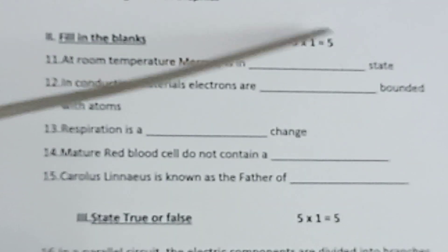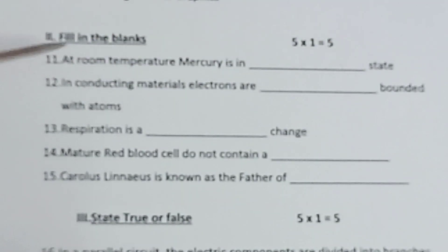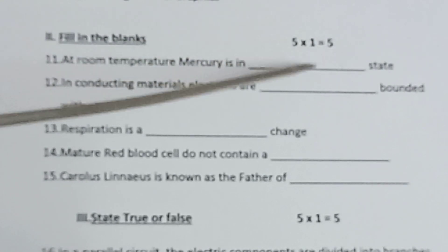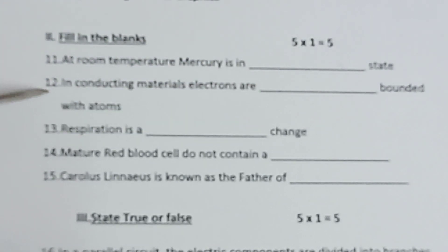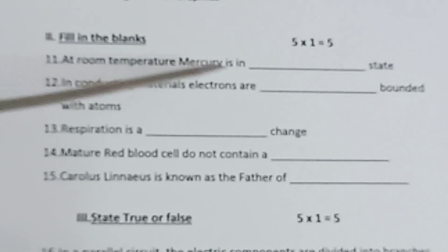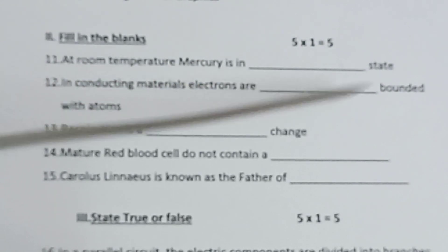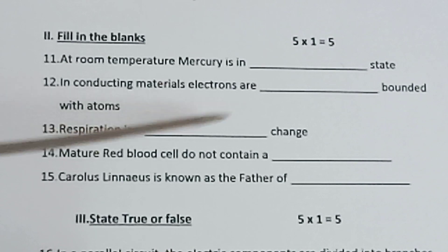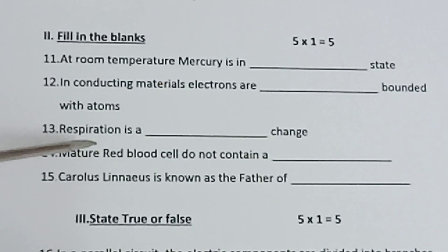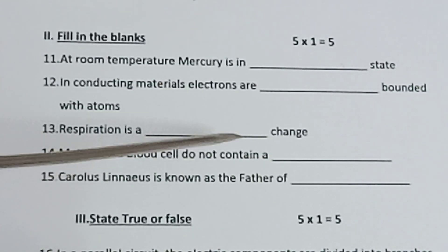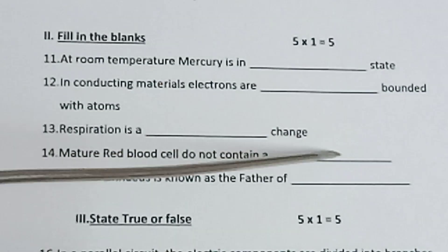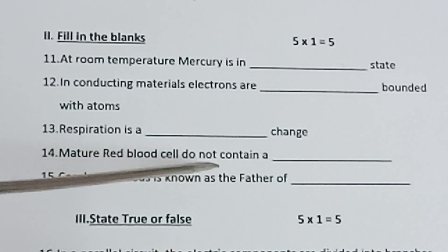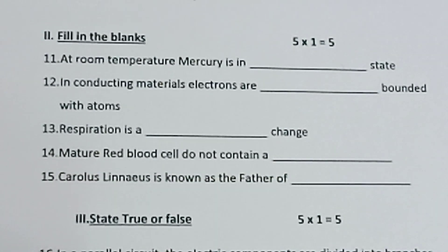Roman numeral two: Fill in the blanks. 5 into 1 is equal to 5. Eleventh: At room temperature, mercury is in dash state. Twelve: In conducting materials, electrons are dash bounded with atoms. Thirteen: Respiration is a dash change. Fourteen: Mature red blood cells do not contain a dash. Fifteen: Carolus Linnaeus is known as the father of dash.